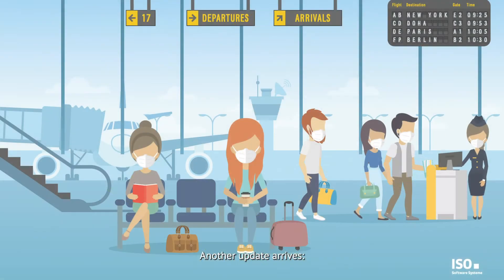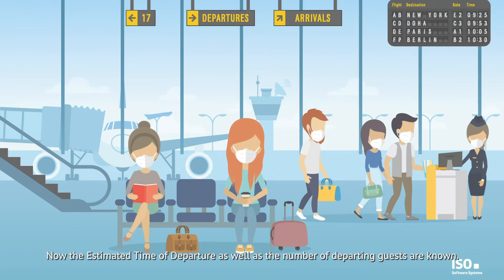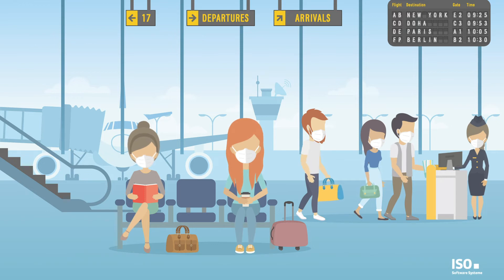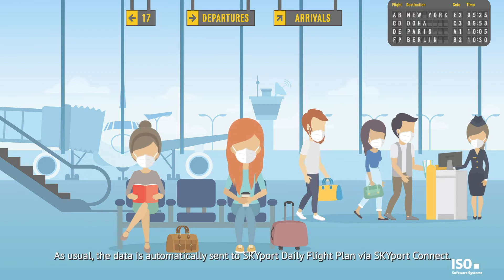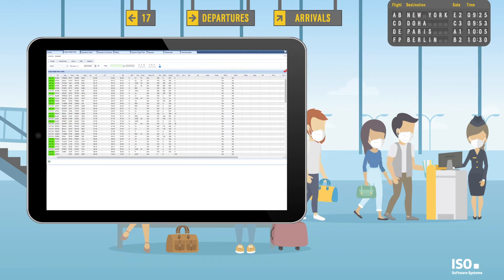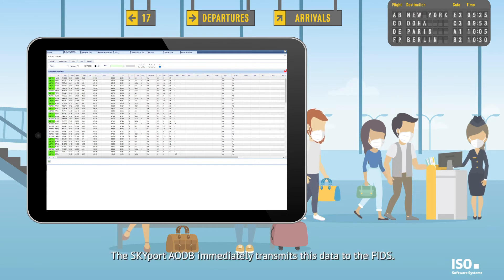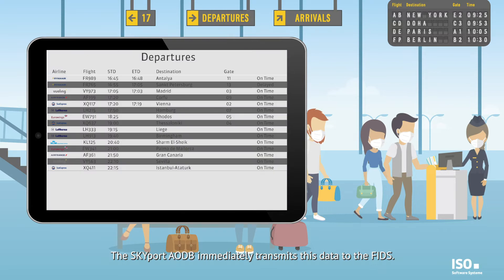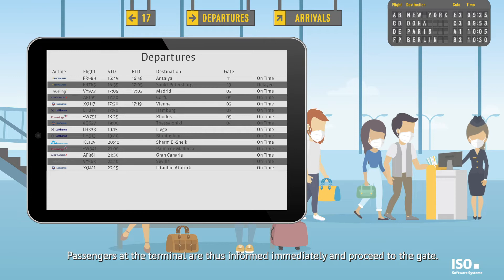Another update arrives. Now the estimated time of departure as well as the number of departing guests are known. As usual, the data is automatically sent to the Skyport daily flight plan via Skyport Connect. The Skyport AODB immediately transmits this data to the FIDS. Passengers in the terminal are thus informed immediately and proceed to the gate.